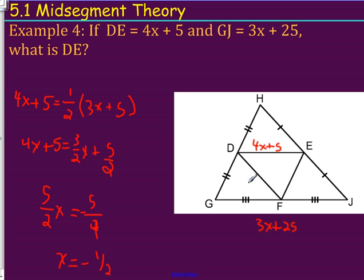If I plug negative one half back into this equation, in order to figure out what DE is, I'm going to have 4 times negative one half plus 5, which is then going to turn out to be 3.